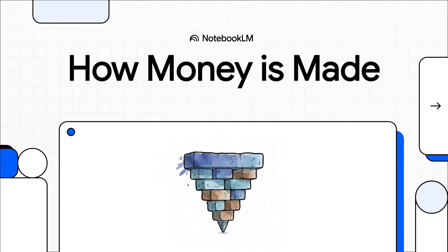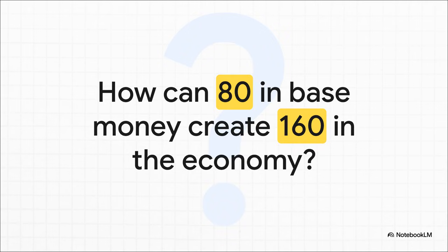Have you ever really stopped to wonder where money comes from? I'm not just talking about the physical cash, but the total amount of money that exists in an economy. Today, we're going to unpack exactly how that number is calculated, and trust me, the answer is probably not what you think. Let's jump right in with the central puzzle we're going to solve: how can you start with 80 shekels and somehow end up with 160 shekels in the economy? It feels like it breaks the laws of math, but stick with me, because by the end of this you'll see exactly how it works.